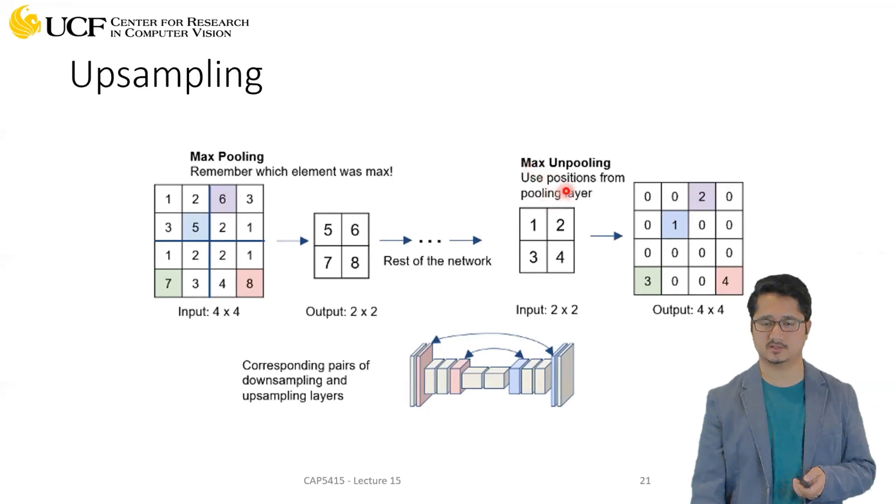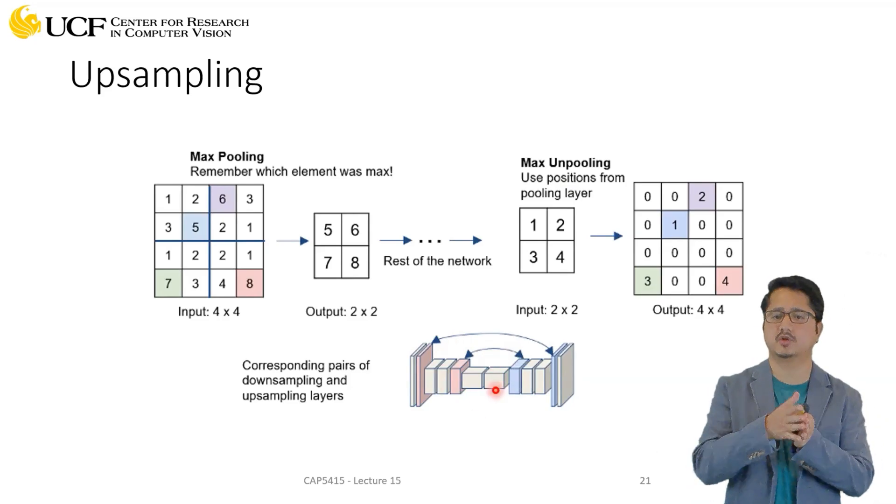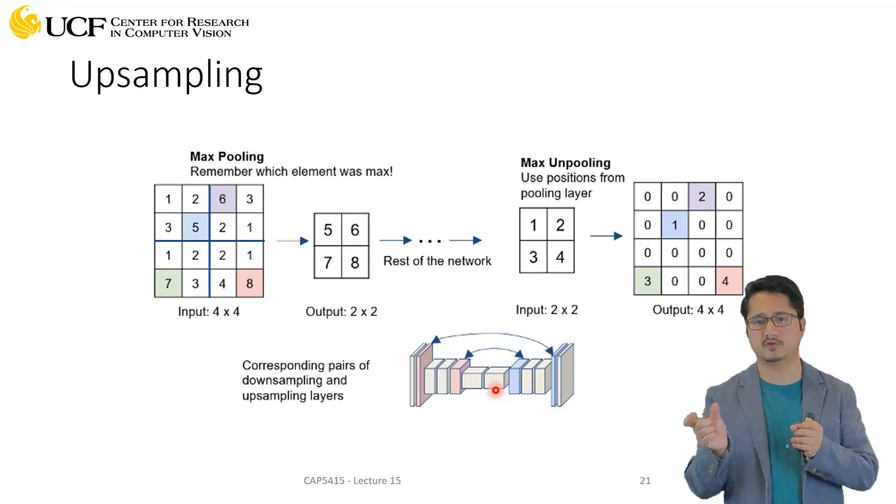You will have a long encoder, you will have a long decoder. Then the idea is you should have corresponding layers. If you have some layer in your encoder, you should have a corresponding layer in the decoder as well where you will try to match these indices of the max pooling elements.